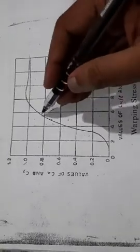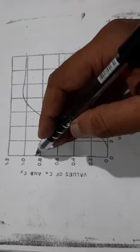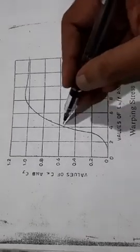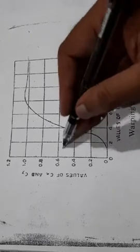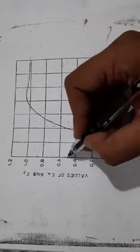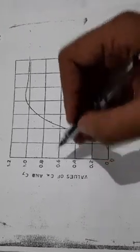For Lx by L we got 5.73, that will be around here. See where it intersects. That will be 0.88. 5.73 is somewhere here, if I take it here it will cut somewhere here that will give you 0.88.